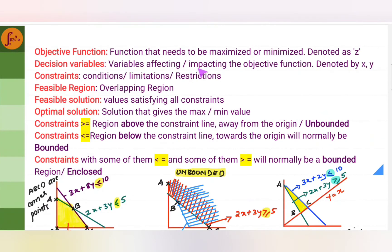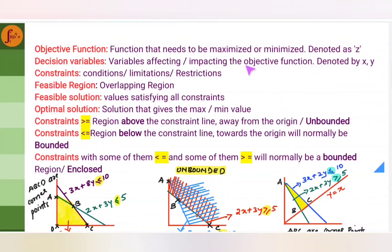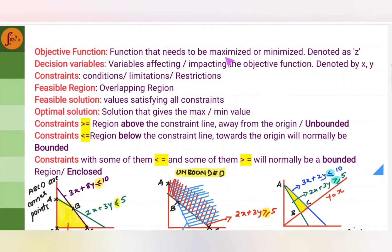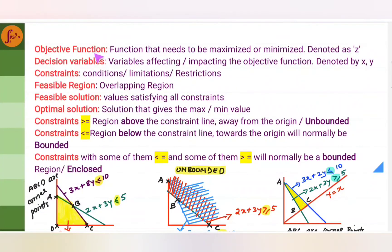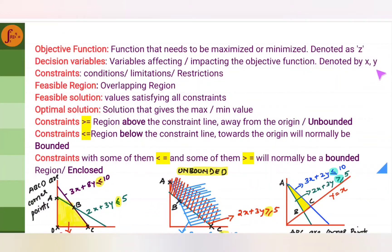Let's go through some basic terminologies. In any industry or manufacturing company, the main objective of the management is to maximize profit or minimize cost. That is their objective or purpose, and it is called the objective function, denoted by Z. Decision variables are certain parameters or resources that enable a particular business — it could be the products they manufacture, the fertilizers used in agriculture, or the machines used in industries. All of these resources that directly impact profit or cost are called variables, denoted by X, Y, X1, Y1, and so on.